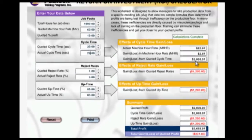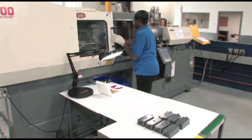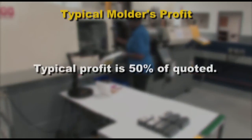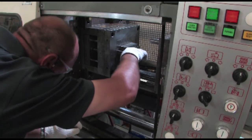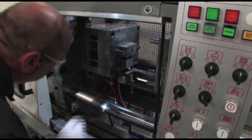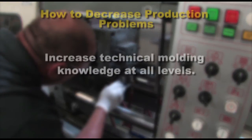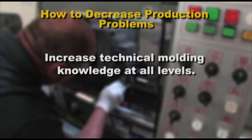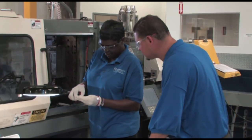All four elements affecting profit — startup time, downtime, reject rate, and cycle time — are important, and it takes skilled personnel to efficiently run molding jobs. From our over 36 years of experience in the molding industry, we know that the typical molder's profit is only about half of what they quote. In nearly every plant we visit, we observe production problems that reduce profit. Nearly all of these problems don't have to happen. The irony is that most managers recognize the problems but don't know what to do about them. The answer is increased technical molding knowledge at all levels on the production floor — giving personnel the knowledge they need to do their job best.